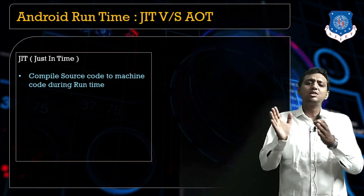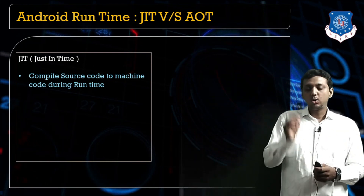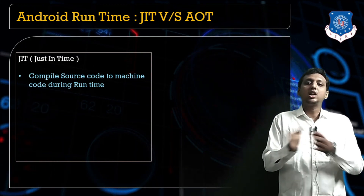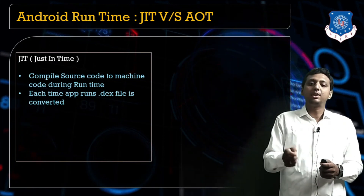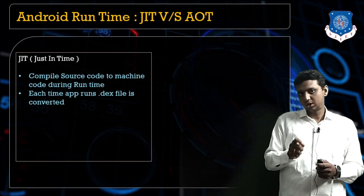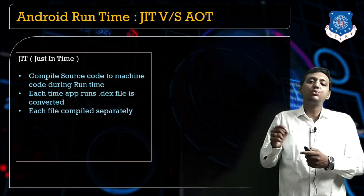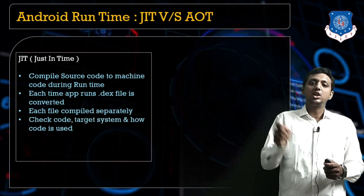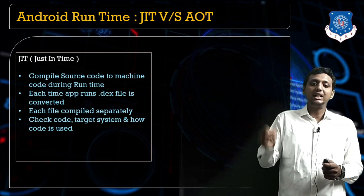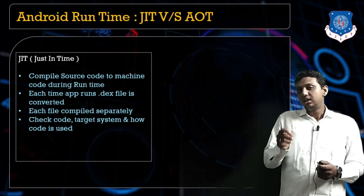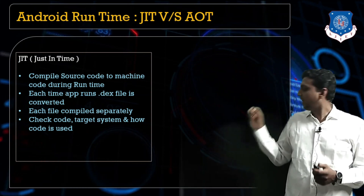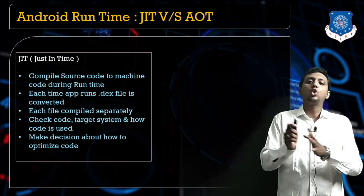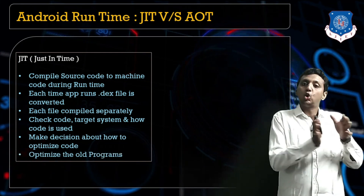Just-In-Time compiles the source code to machine code during runtime. Whenever an application starts, it compiles the source code and converts it into machine-level code. Each time the app runs, the .dex file is converted. The JIT checks the code and the target system, understands how the code is used, makes decisions about how to optimize it, and also optimizes your code programs.